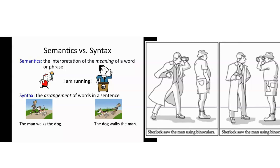You'll see that in different languages, the syntax is different. For example, I've been learning Spanish. In English I'd say 'the white cat,' but in Spanish you say 'el gato blanco' — 'the cat white.' So syntax can be different in different languages. Syntax in American Sign Language is also different than it is in American English. Sometimes even when you have the same words in the same order, it can be interpreted differently — like 'Sherlock saw the man using binoculars.' Was it Sherlock using the binoculars, or the man? It can be interpreted both ways.